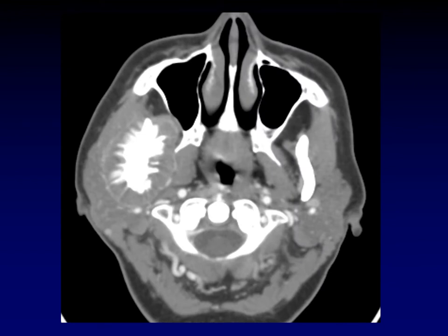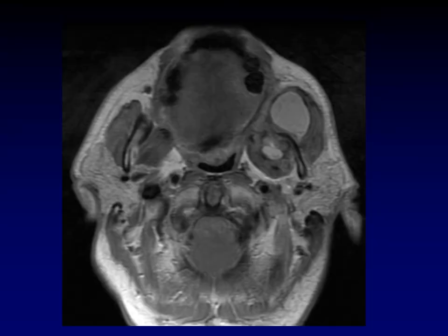Here's another more aggressive-looking mass in the masticator space, pushing on the parapharyngeal fat predominantly medially and a little bit posteriorly. This lesion is obviously arising from the jaw itself — it turns out to be a Ewing sarcoma, which you might have guessed from the hair-on-end or starburst pattern of bone. Here is another tumor arising from the mandible itself: a mucoepidermoid carcinoma of the mandible, a relatively unusual histology for that location.